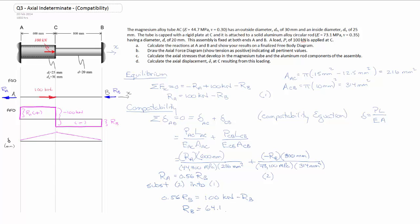We can solve that to figure out that RB is equal to 64.1 kilonewtons. We then substitute that back into either equation, and we get RA is equal to 100 kilonewtons minus 64.1 kilonewtons. We figure out that RA is equal to 35.9 kilonewtons.